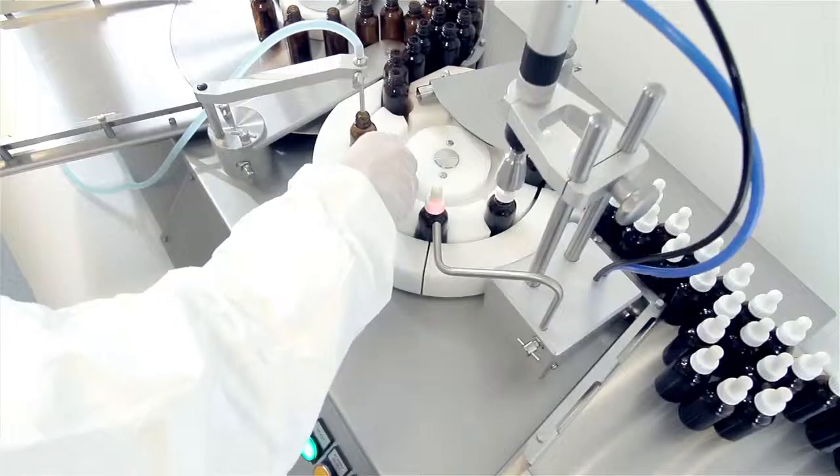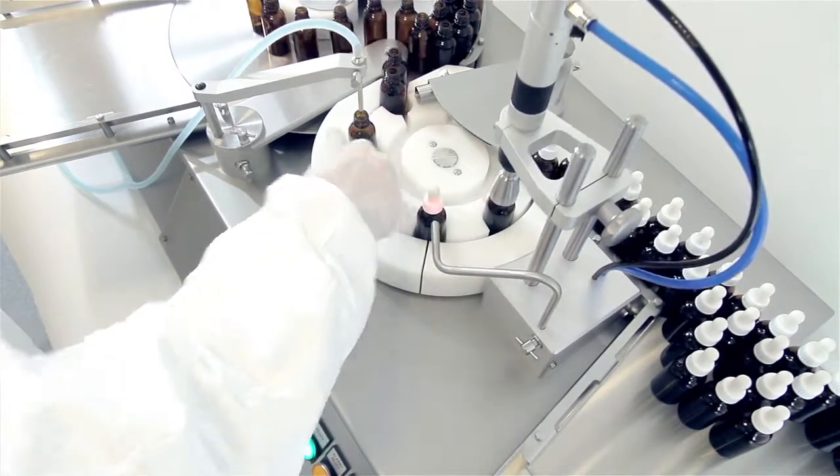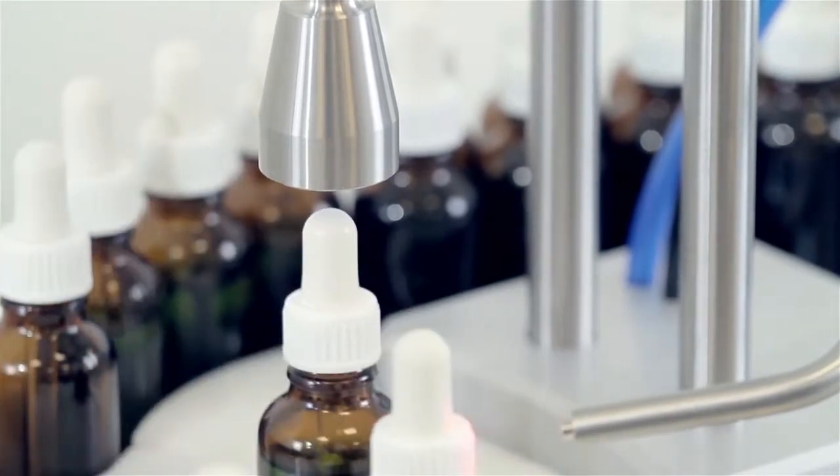Filled and capped bottles leave a standard FlexFeed 30 on trays. However, the machine can be customised with bottles being fed onto a conveyor into a labelling machine, further improving productivity.